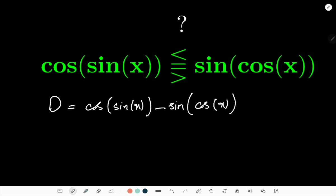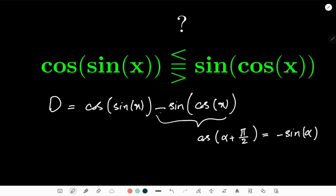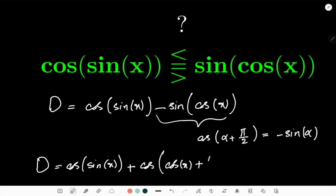Here, sin(x) acts like an angle — I have cosine of an angle minus sine of an angle. To simplify, I use the identity: for every α, cos(α + π/2) = −sin(α). So I can rewrite the sine term, and d becomes cos(sin(x)) + cos(cos(x) + π/2).